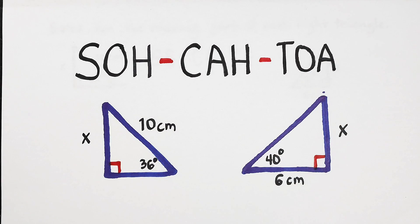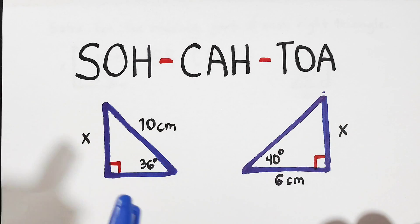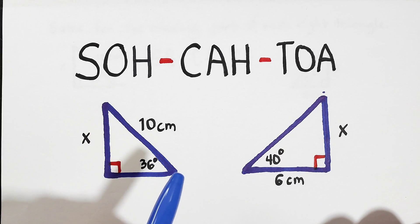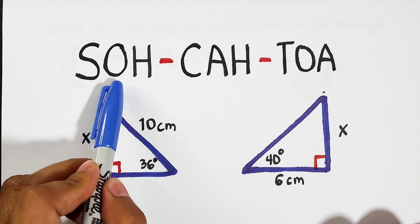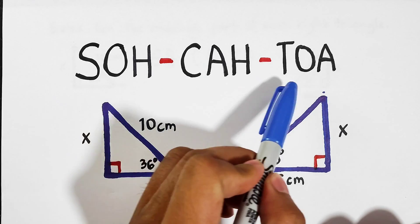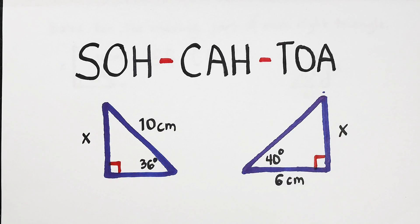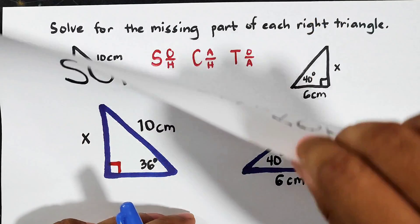Hi guys, it's me, Teacher Goingon. In today's video we will talk about how to solve the missing part of a given right triangle using SOH-CAH-TOA. So without further ado, let's do this topic.